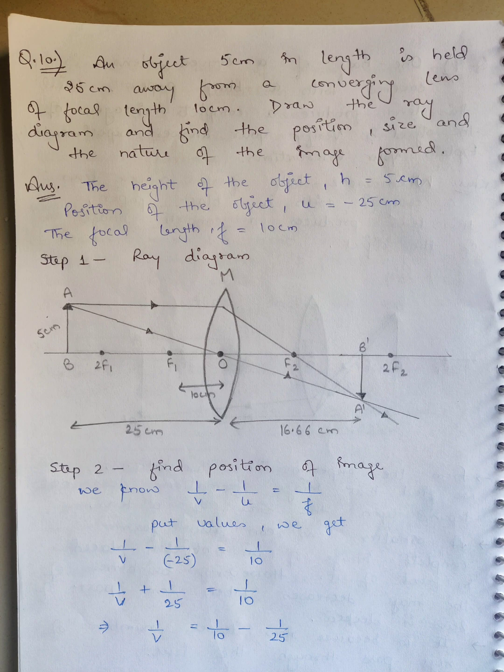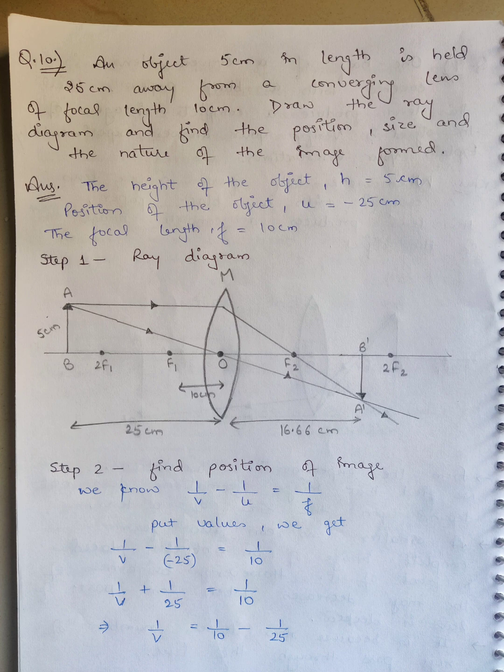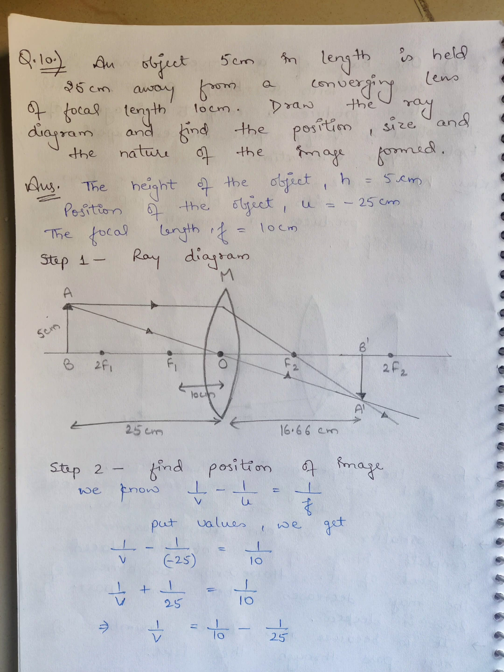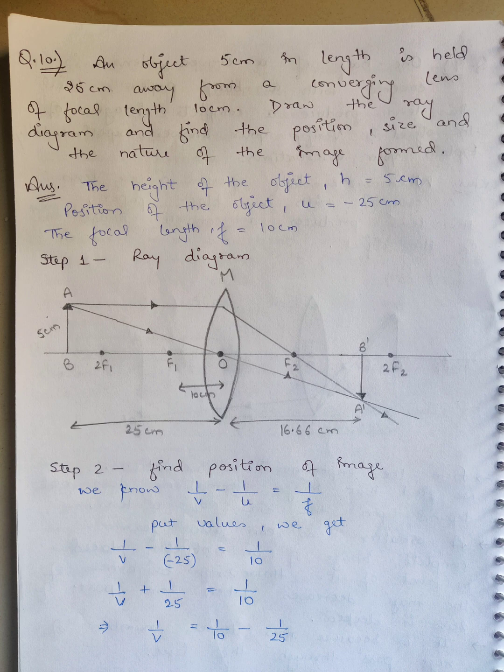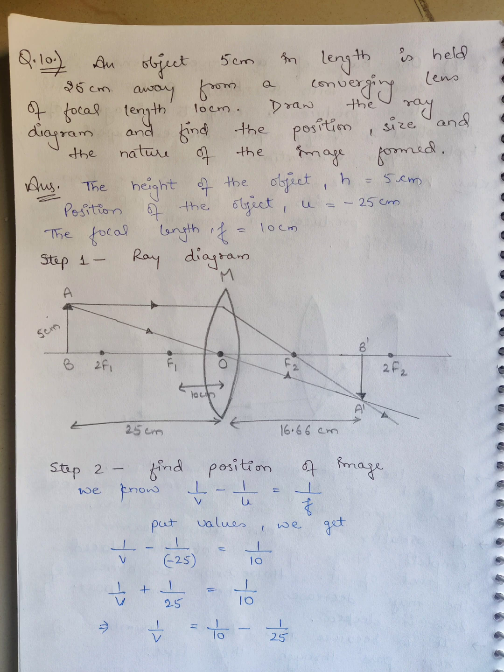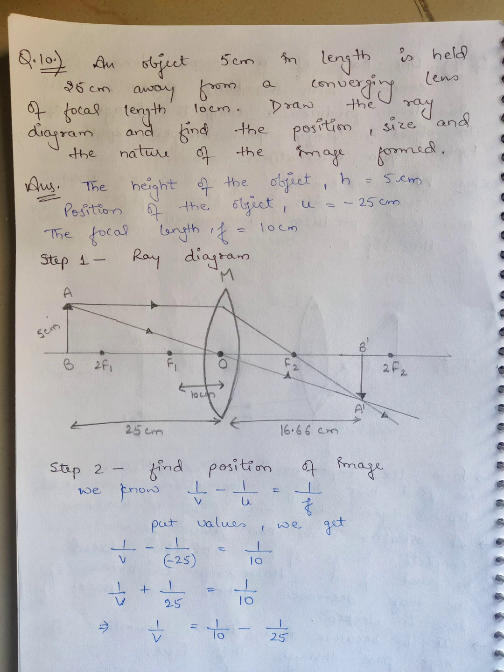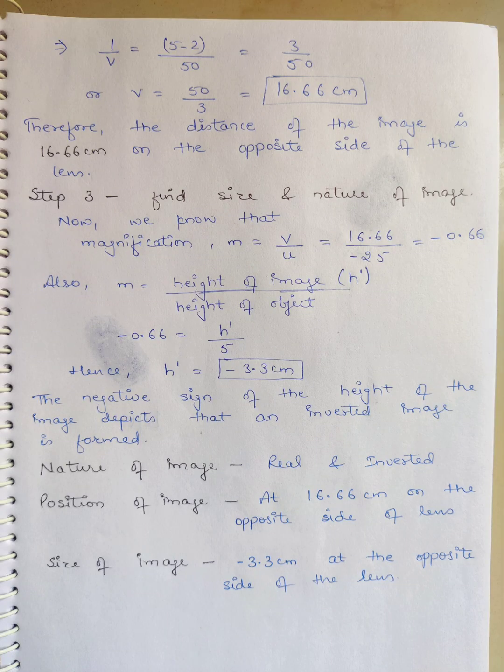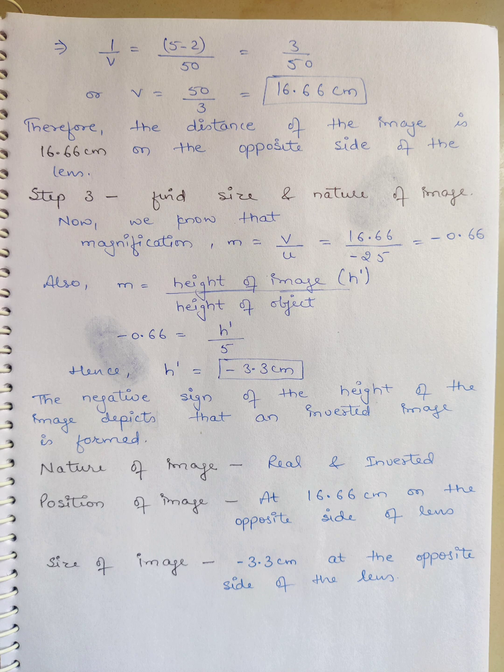Draw the ray diagram, find position, size and nature of the image. Four things we have to find. In step 1, we show the ray diagram. In step 2 we find position, in step 3 find size and nature. You can see this diagram, draw it clearly. We need the formula: 1/v - 1/u = 1/f. This formula I discussed in Chapter 1 formulas video. We put values of u and f here to solve.